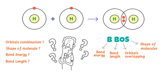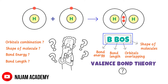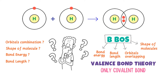Remember this personal mnemonic for VBT. If I ask you what is valence bond theory, your answer is simple: VBT teaches us bond energy, bond length, orbital overlapping, and the shape of a molecule. Also remember that VBT only explains the formation of a covalent bond — it does not explain ionic bonds or metallic bonds.